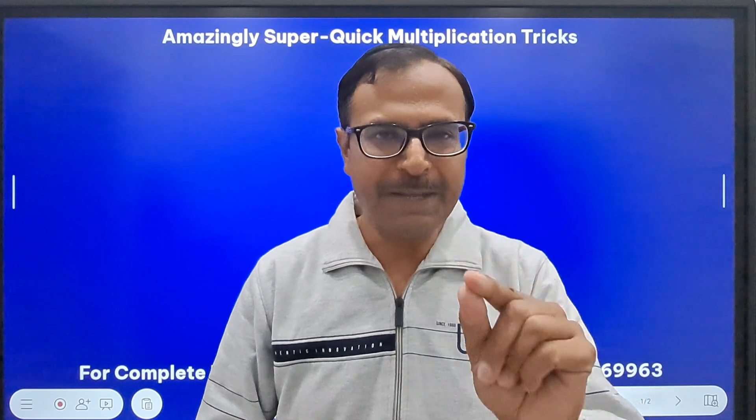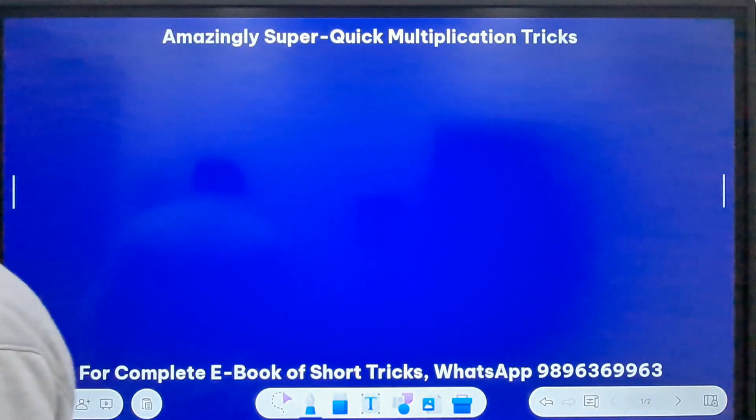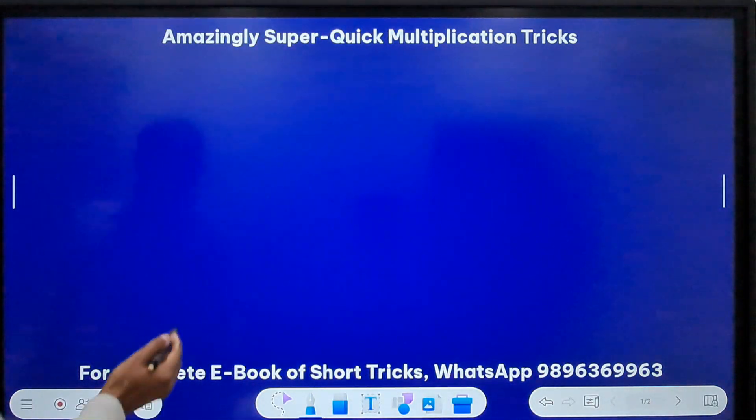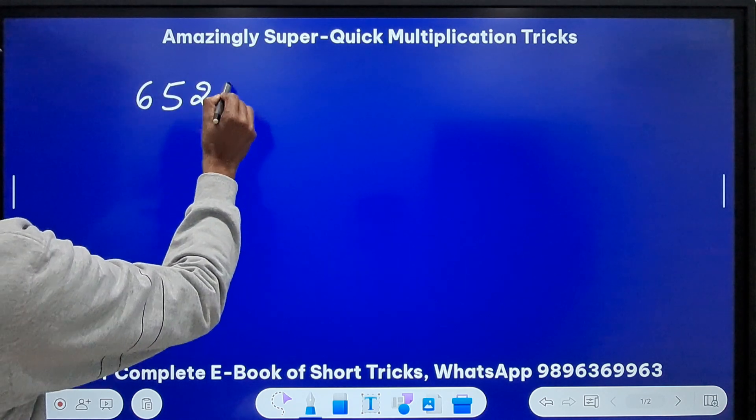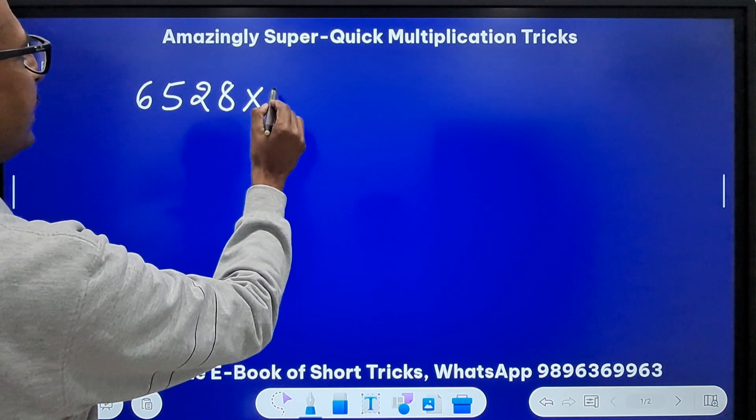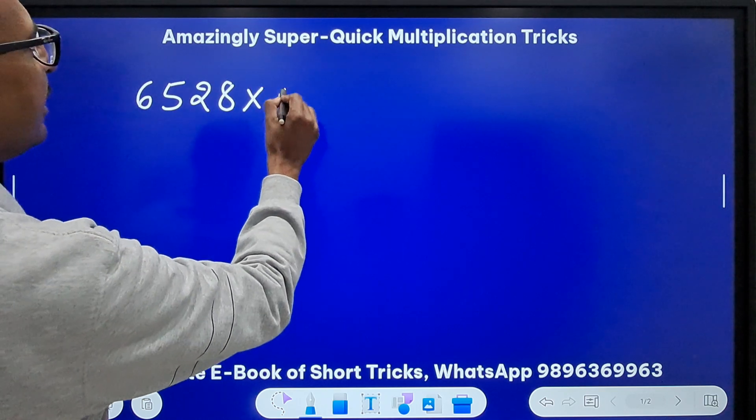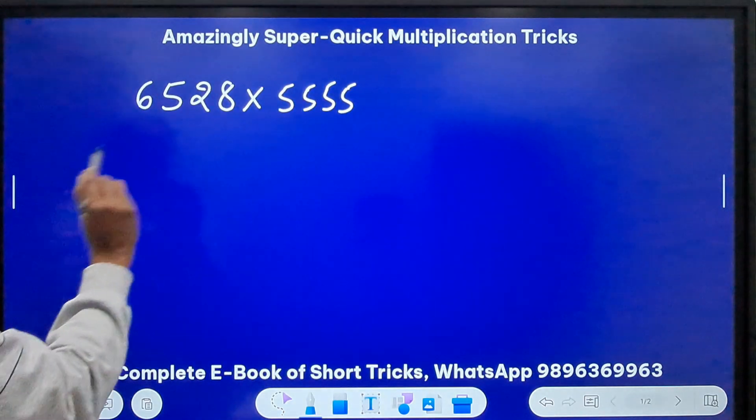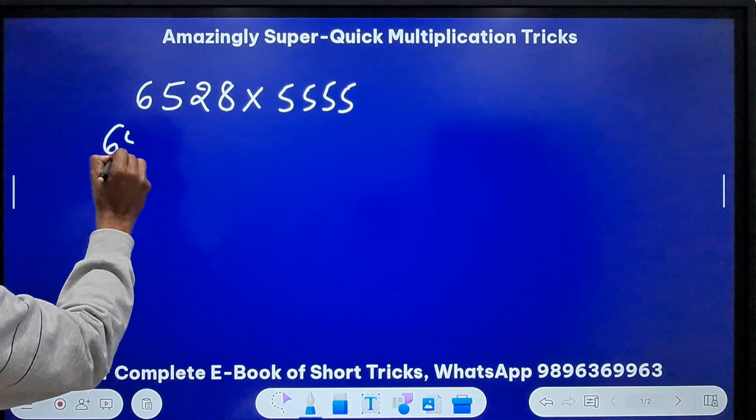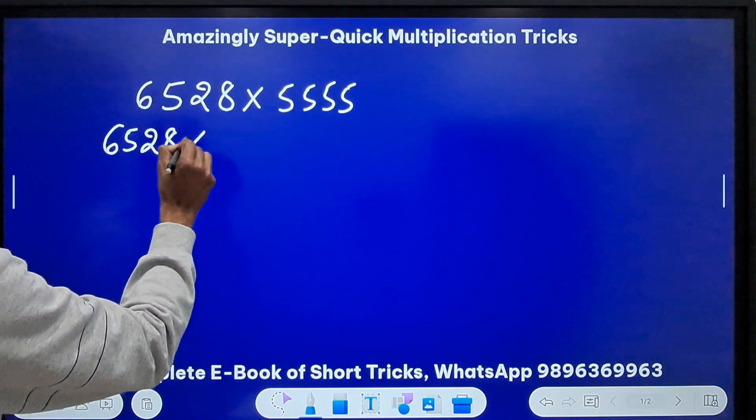For the first trick, I am taking a four-digit number like 6528 and I will multiply it by a repeating number like 5555. Now, this number 6528, if I am able to multiply it by 5 and then by 1111, doesn't make a difference. Multiplication by 5 is easy.